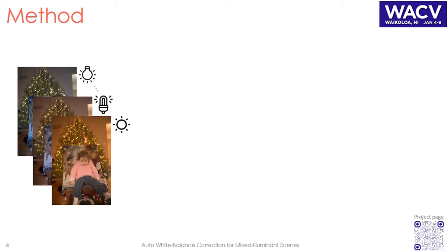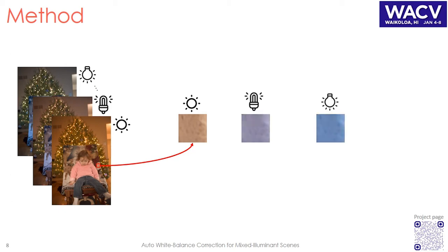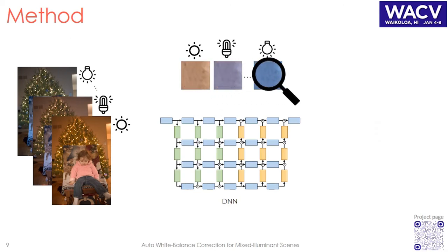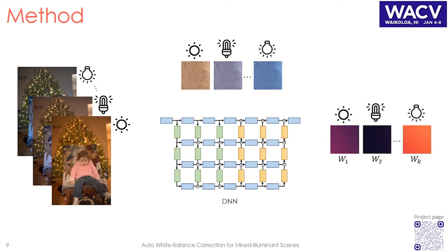Our hypothesis is that the final corrected white balance can be generated by linearly blending among the different white balance settings. By observing the same scene colors under a fixed number of white balance settings, our deep neural network can get good cues about the proper blending weights.